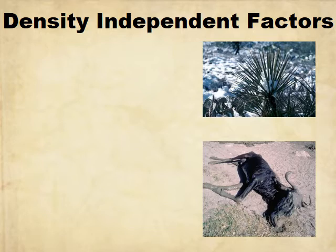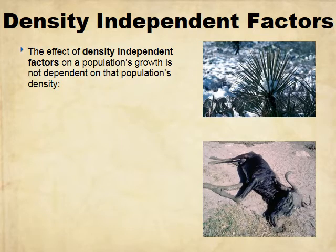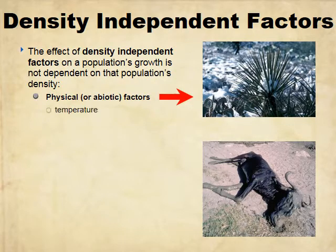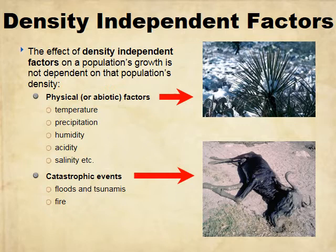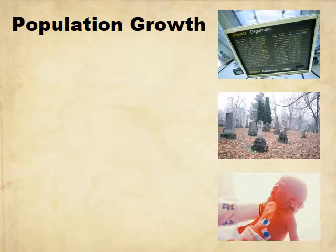Density-independent factors don't depend on how many individuals are in the area at all. Your physical or abiotic factors are usually things like temperature, precipitation, humidity, acidity, salinity, and catastrophic events especially — like floods, tsunamis, fires, and hurricanes. It doesn't matter how many people are in a classroom if a tornado rips through it; whether there are 20 or 40, that whole population is going to be affected. Drought, earthquake, and volcanic eruption are a few more.